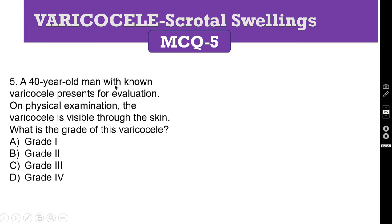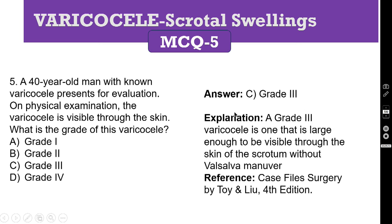MCQ 5: a 40-year-old man with known varicocele presents for evaluation. On physical examination, the varicocele is visible through the skin. What is the grade of this varicocele? A, grade 1; B, grade 2; C, grade 3; D, grade 4. The correct answer is C, grade 3. Grade 3 varicocele is large enough to be visible through the skin of the scrotum without a Valsalva maneuver. Grade 1 is palpable only on Valsalva maneuver; grade 2 is palpable without Valsalva; grade 3 is visible through the skin; and grade 4 involves elongated, tortuous veins.